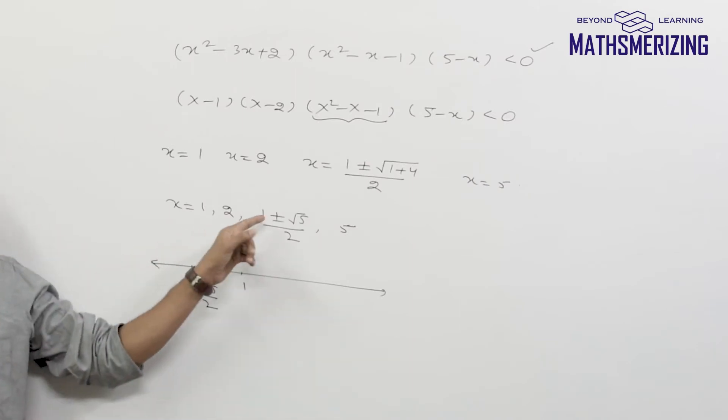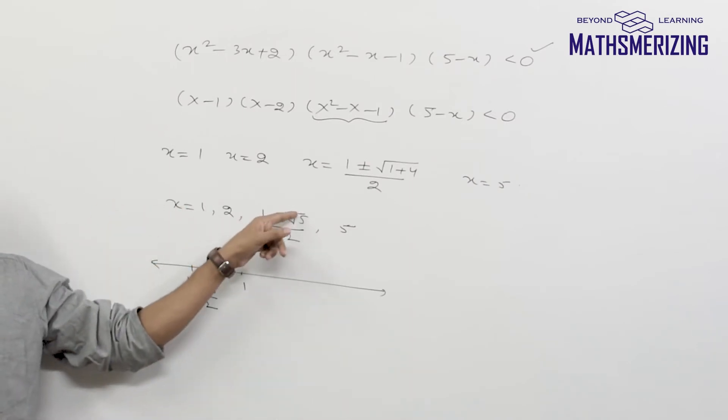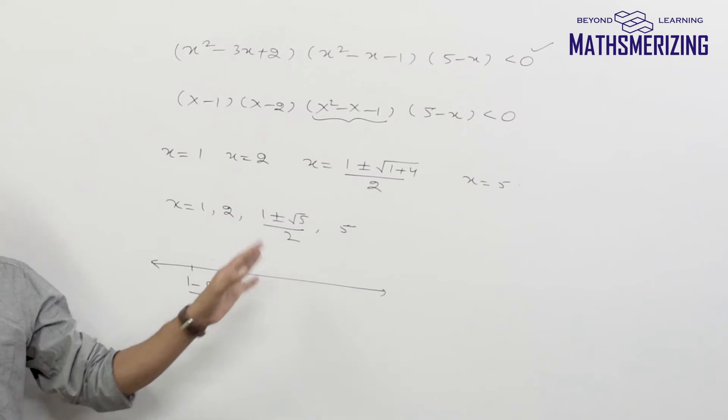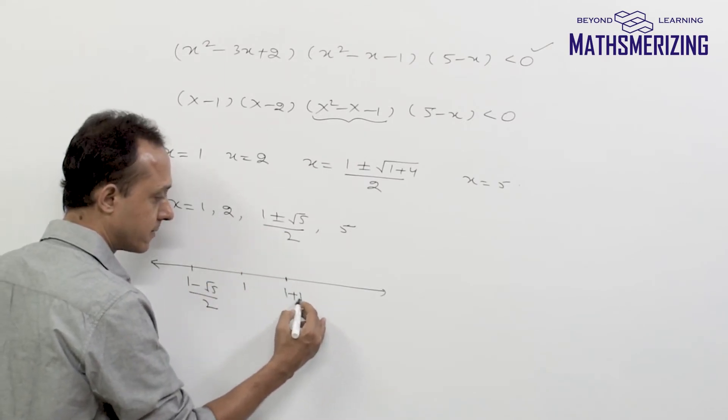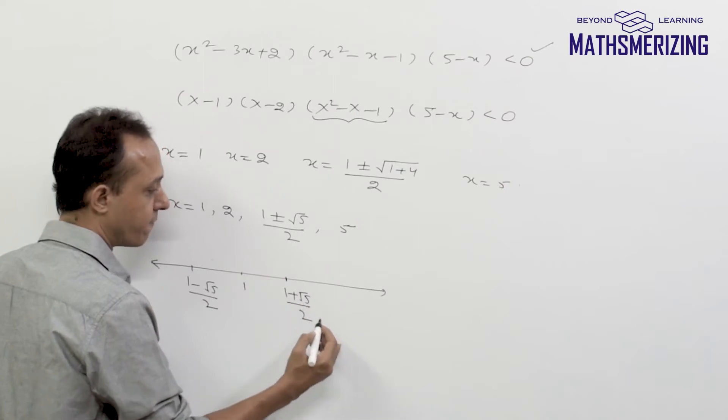Now after 1 we'll have—what is root 5? Root 5 is 2 point something, so 2 point something plus 1 is 3 point something. 3 point something divided by 2 is approximately 1.5 something. So the next one will be 1 plus under root 5 by 2.